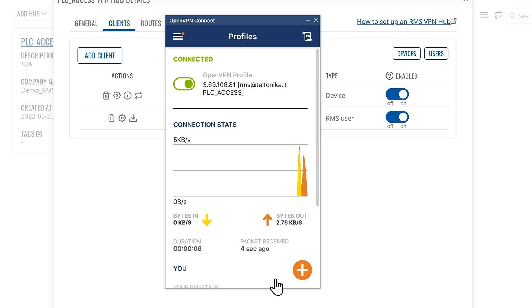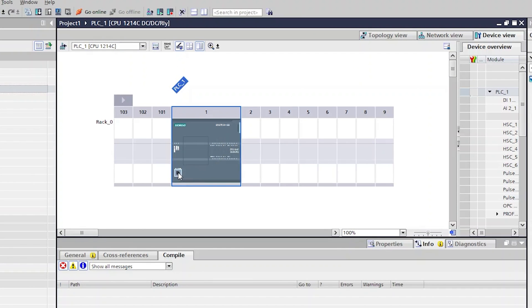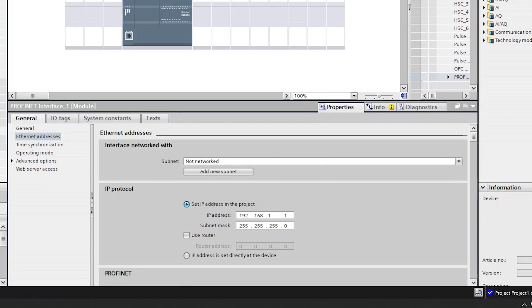And that's it. We are connected to our RMS VPN hub. Now we can connect to our remote PLC device and use the manufacturer's software.